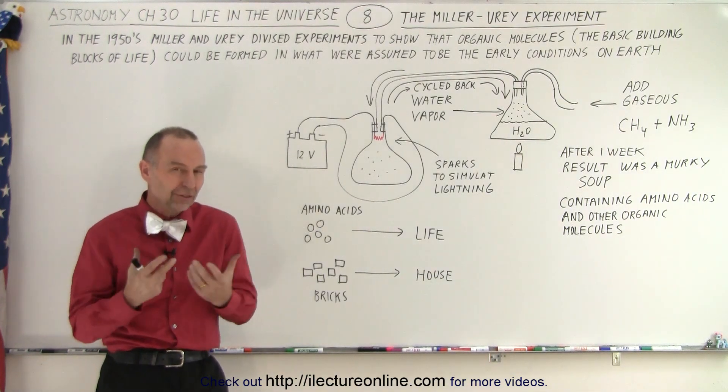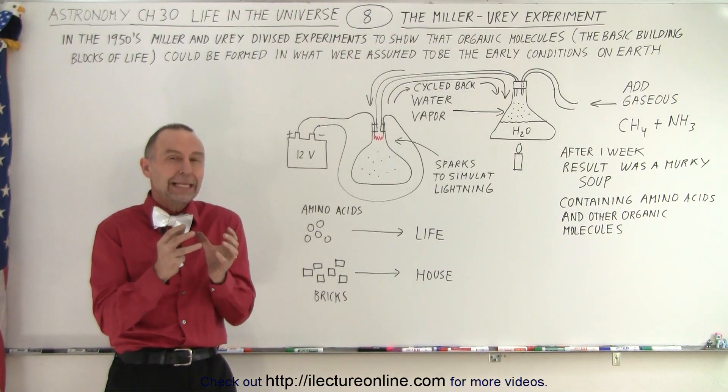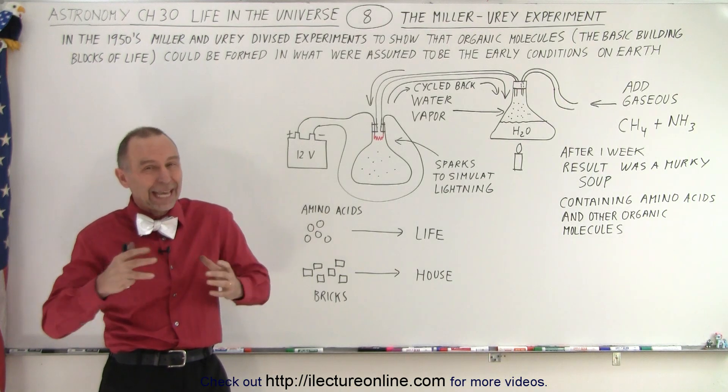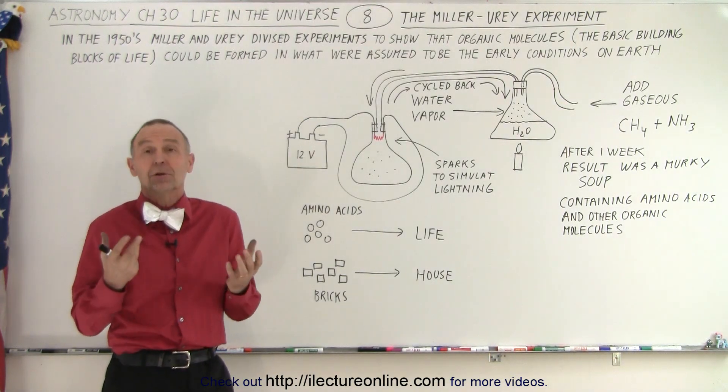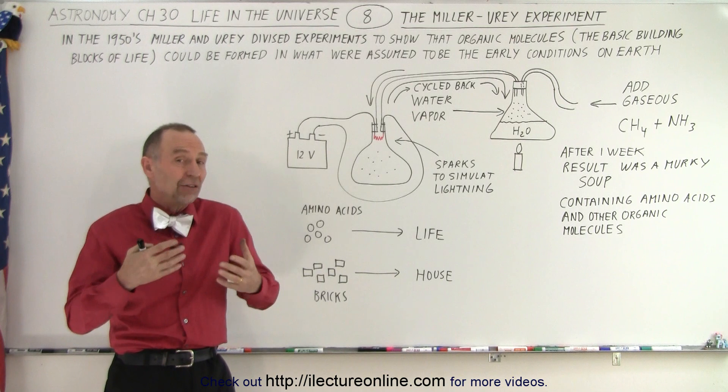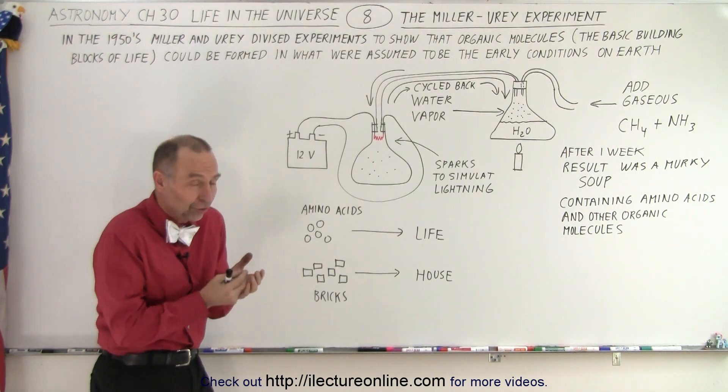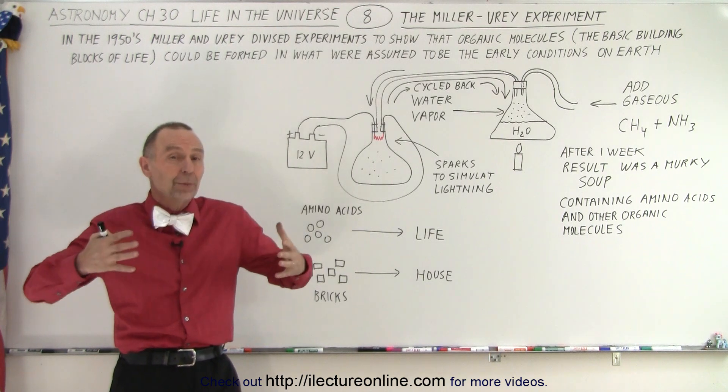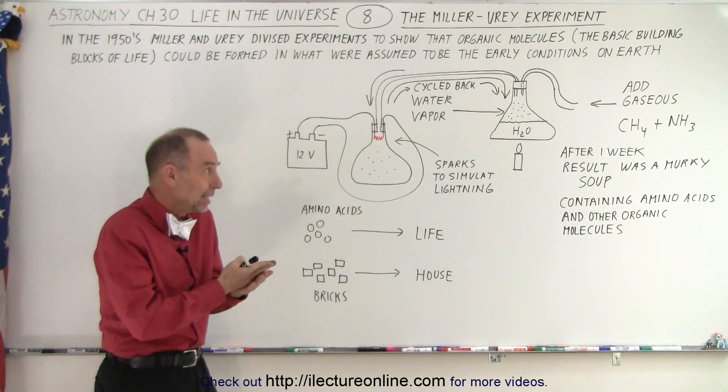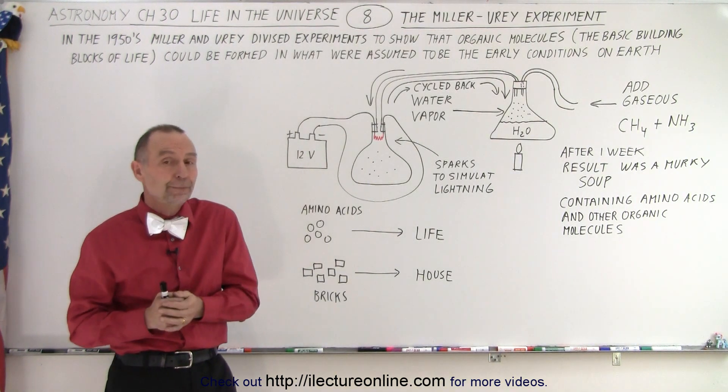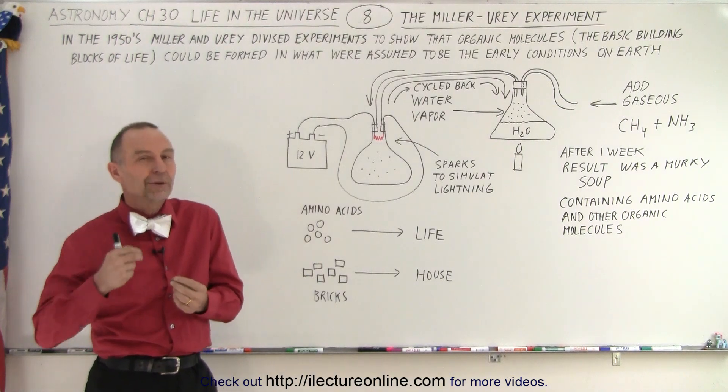So both Miller and Urey came up with this idea to try and simulate the early conditions of Earth and then provide chemicals, put them together in a fashion that might resemble how it may happen on the Earth. And of course he's using chemicals that are readily available in our solar system: methane, water and ammonia, and of course a little bit of energy or heat.